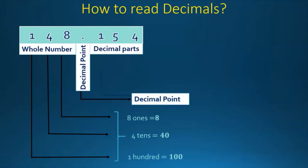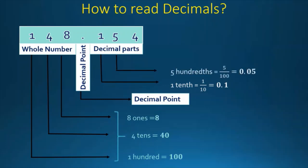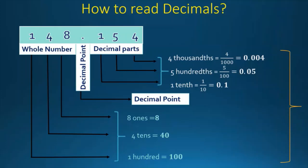Then when we get to the decimal point, the 1 in the decimal part is equal to 1 by 10, or 0.1. The 5 in the decimal part is equal to 5 by 100, or 0.05. The 4 in the decimal part, which is our final number, is equal to 4 by 1000, which is equal to 0.004. Together these comprise the decimal part of 148.154.